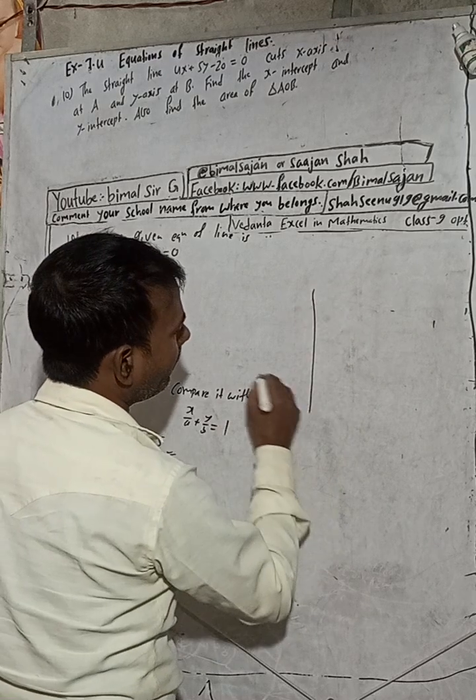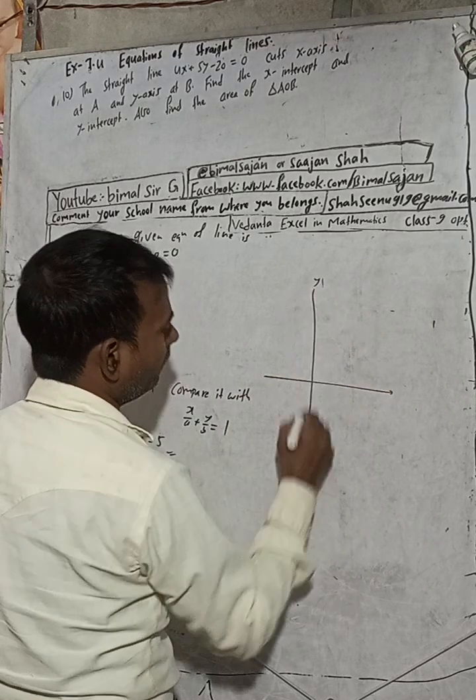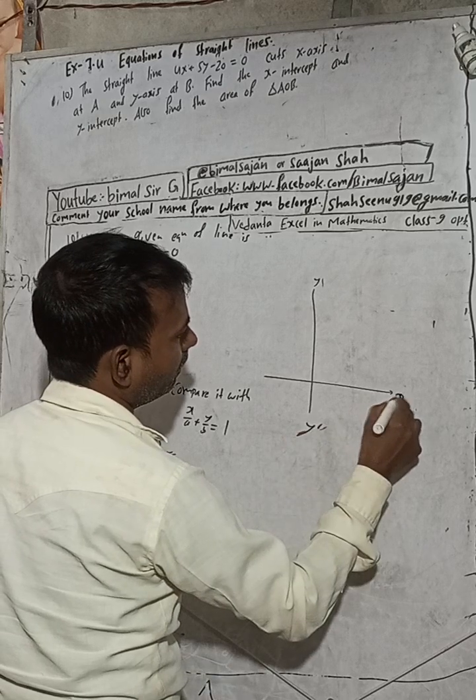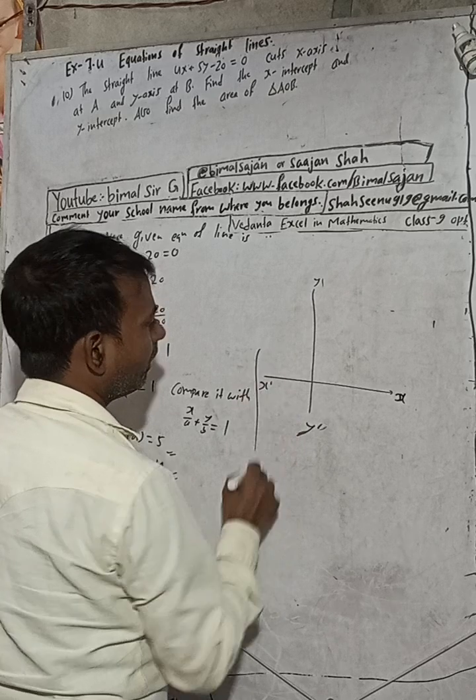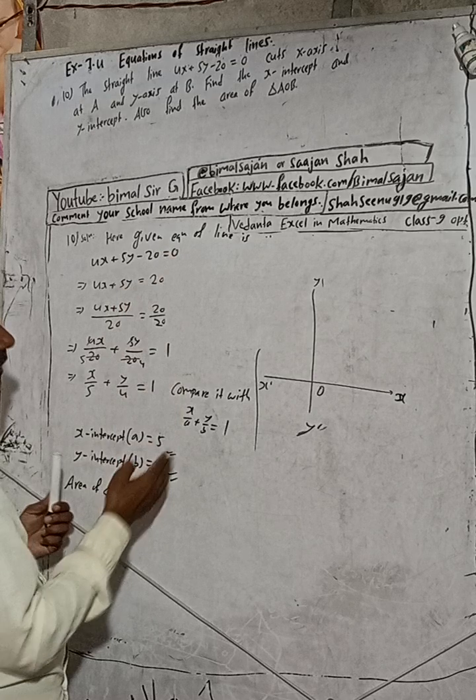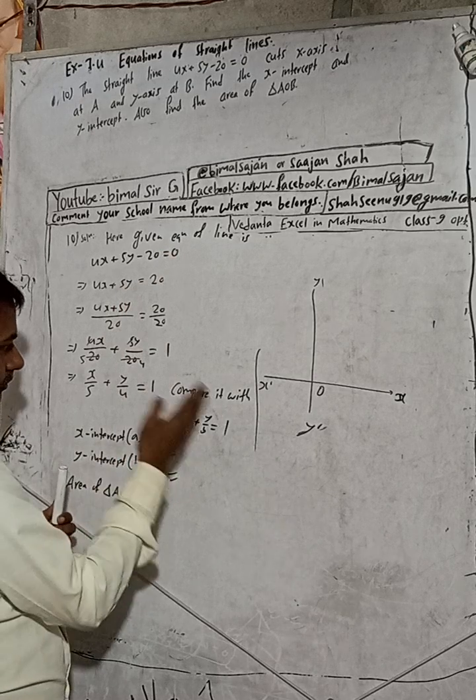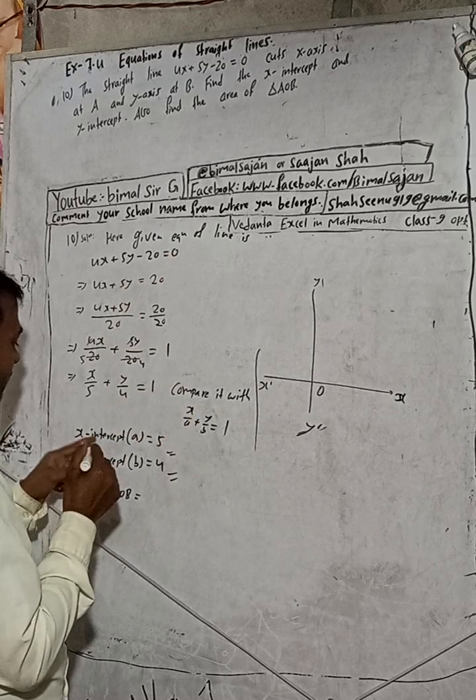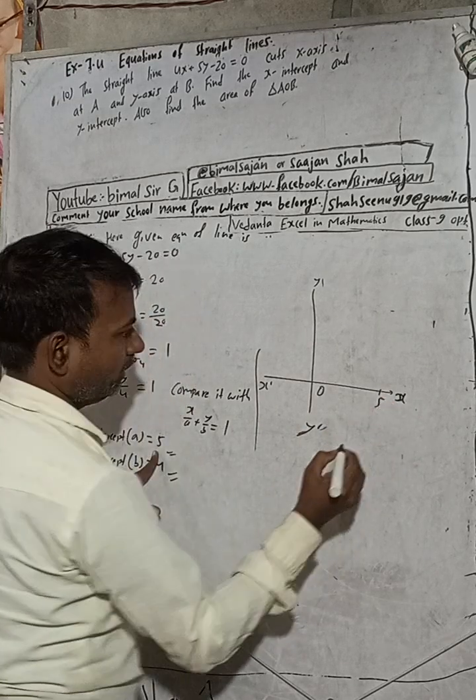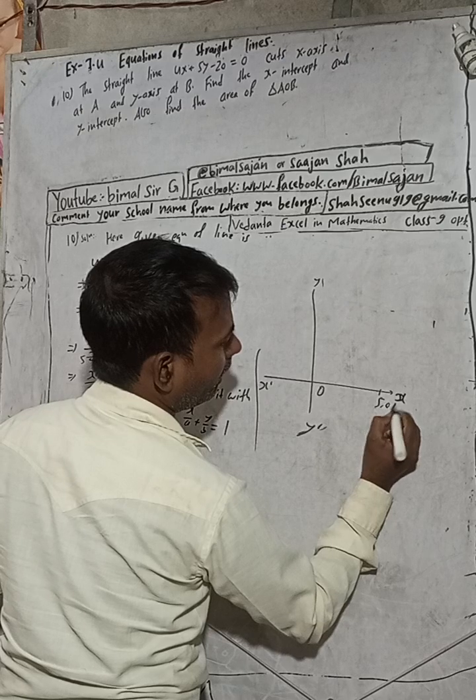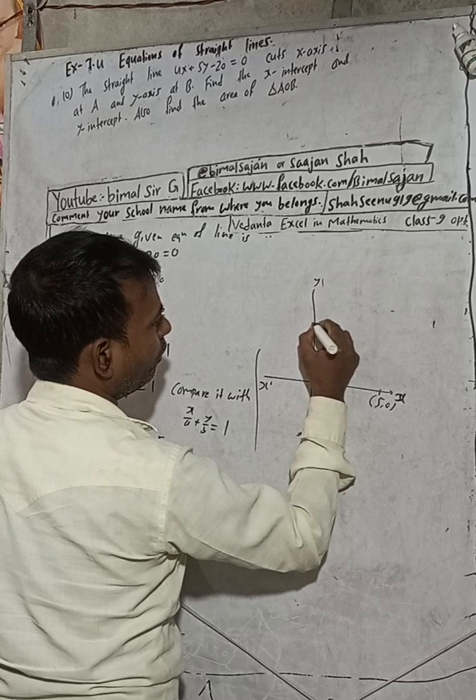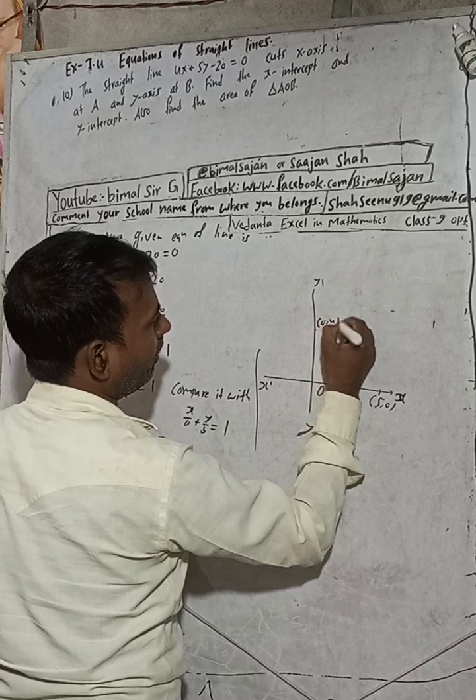This is our y-axis, and this is y dash, and this is our x-axis, and this is our origin. Now we have, when we solve this equation in the intercept form, we got here x-axis 5, that means x-axis 5, that means this is (5, 0), and y-axis b, that means b, this is y is our 4, that means this is (0, 4).